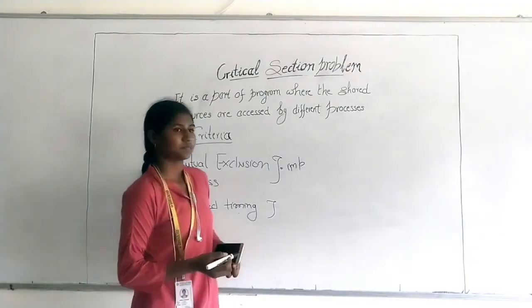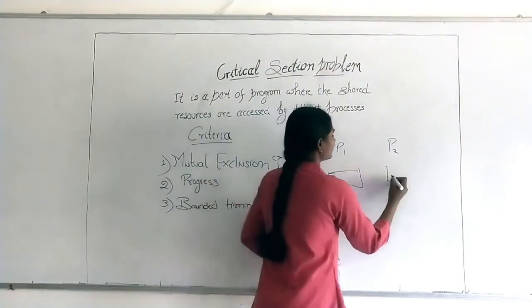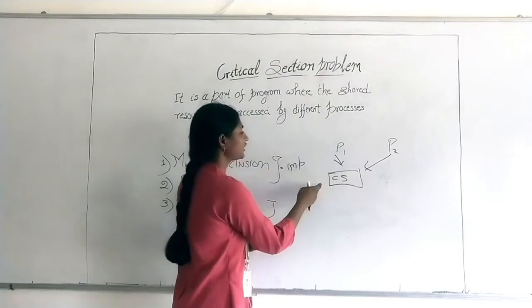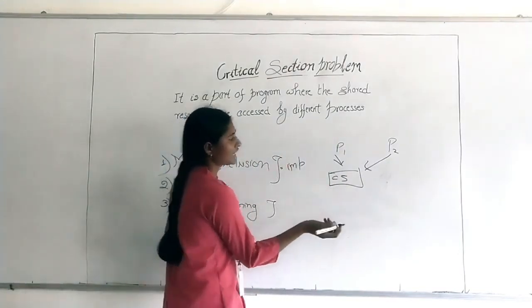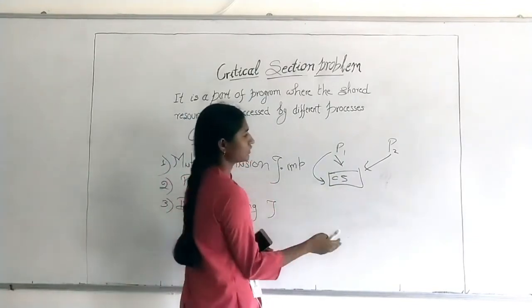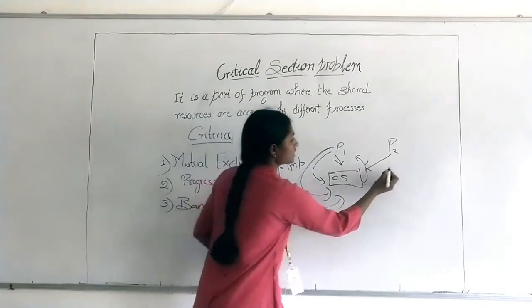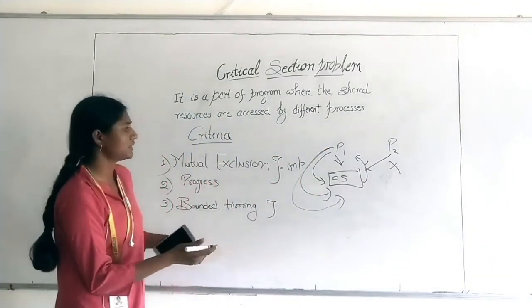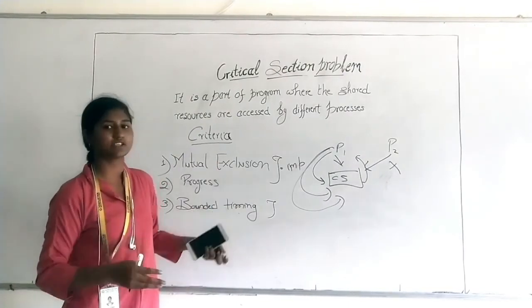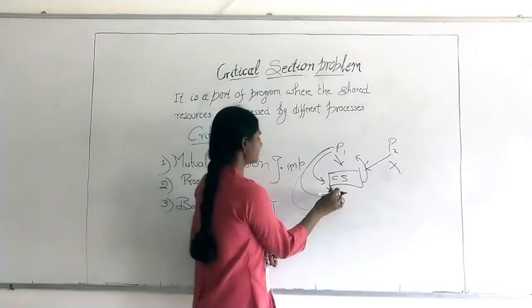The third criterion is bounded waiting. If P1 and P2 both want to use the critical section, it should not happen that P1 keeps continuously getting the chance to execute the critical section again and again while P2 never gets a chance. Every process should get a bounded opportunity to use the critical section — no single process should use it for an infinite time. This is called bounded waiting.